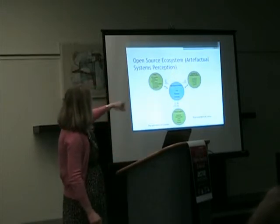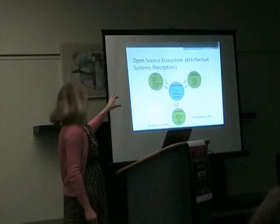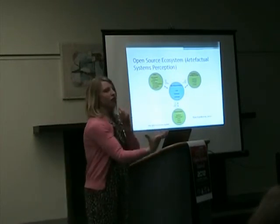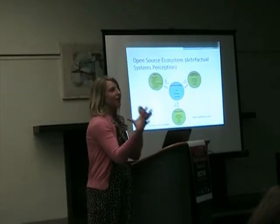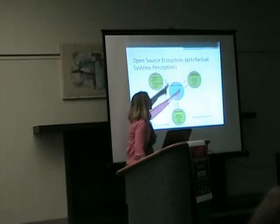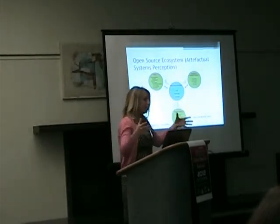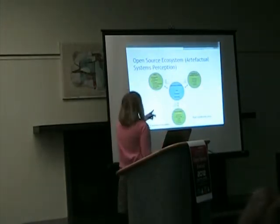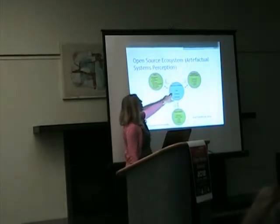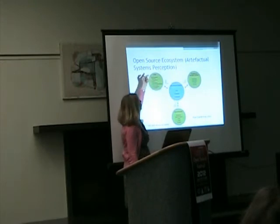Each one of these are groups of people who have to work to make open source software work, because the software is dependent on the social infrastructure. It's not something that just develops on its own. You'll notice that these are double-headed arrows, which shows the kind of social-technical environment that open source comes from. The open source software requires users to add code, time, money, and knowledge to the software, and then they can get software out to work with it.